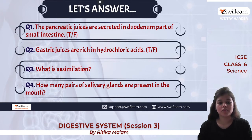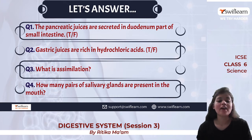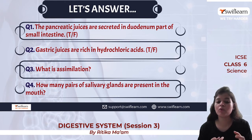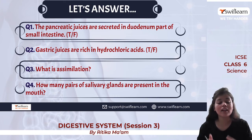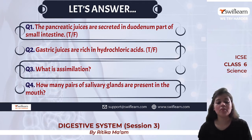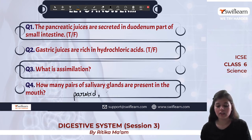Reviewing key points: pancreatic juices are secreted into the duodenum part of the small intestine. Gastric juices are rich in hydrochloric acid, which provides an acidic medium and kills bacteria. Assimilation is the utilization of food for growth, energy, and repair. We have three pairs of salivary glands in the mouth: parotid, sublingual, and sub-mandibular.